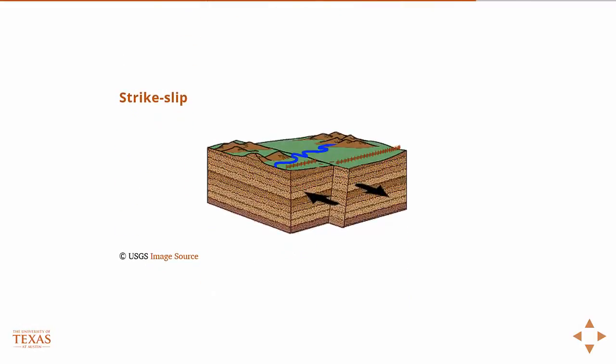The other type is a strike-slip fault. This is where two faults come together and slide. That one is pretty easy to think about. This is also what the San Andreas fault is and what most transform faults are.